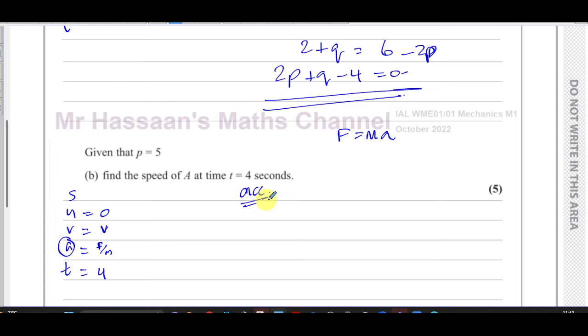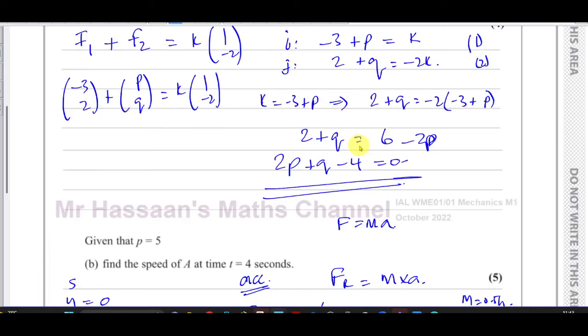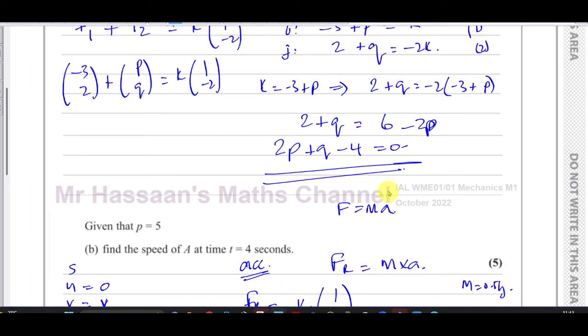I know that the resultant force is the mass times acceleration, and I know the mass is 0.5 kilograms. So now I can find the resultant force. The resultant force, as we said, was k times 1 minus 2. So we need to find the value of k.